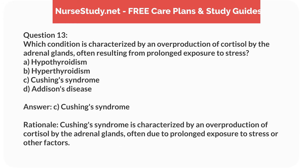Answer: C. Cushing's syndrome. Rationale: Cushing's syndrome is characterized by an overproduction of cortisol by the adrenal glands, often due to prolonged exposure to stress or other factors.